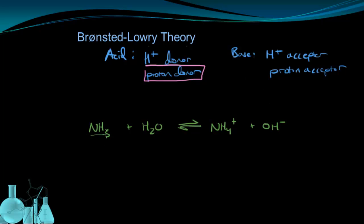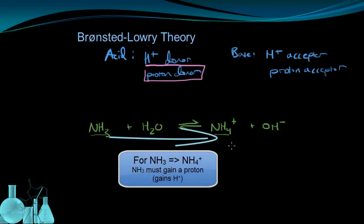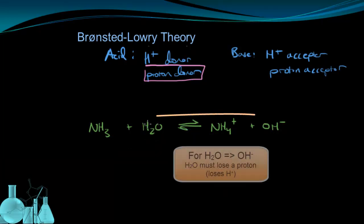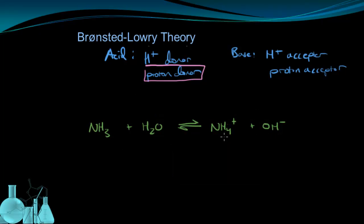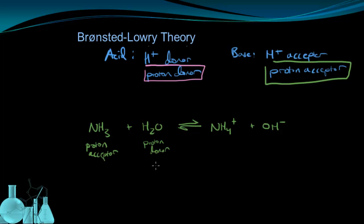Between NH3 and NH4+, it had to gain an H+. And that H+ had to come from the water molecule. So when water gave up a hydrogen, it became the OH- ion, and that hydrogen went to NH3 and made it NH4+. So that makes NH3 a proton acceptor, which is a Bronsted-Lowry base. And in this case, the water is a proton donor. So we would say that NH3 is a Bronsted-Lowry base, and that H2O in this case is a Bronsted-Lowry acid.